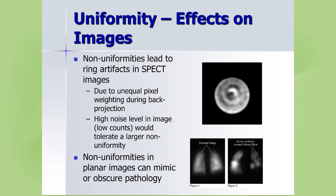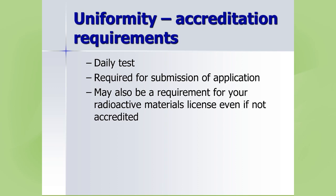For accreditation requirements: uniformity is a daily test required by most state regulations and accreditation bodies. You may need to submit pictures or policies and procedures. Check your radioactive materials license for documentation requirements — in Colorado, for example, the state asks to see these records whether you are accredited or not.